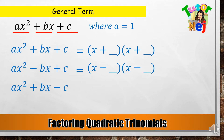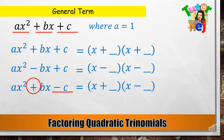AX squared plus BX minus C equals (X plus a factor of C) times (X minus another factor of C). Dito, negative ang C, ibig sabihin unlike signs ang factor ng C. Anong gamit ng ating middle term na sign? Ito yung dadalhin ng mas malaking factor ng C regardless of its sign. Pag positive ito, ibig sabihin yung mas malaking factor ang ilalagay natin doon sa tabi ng positive factor.